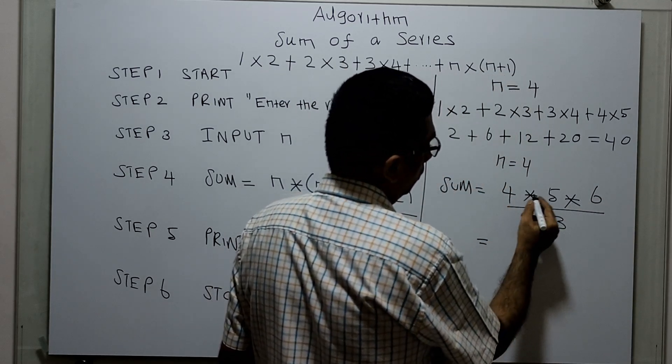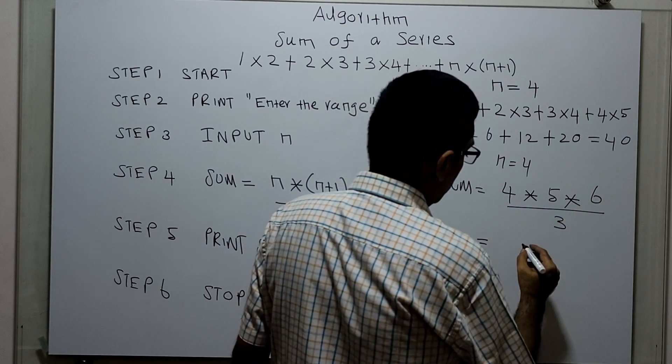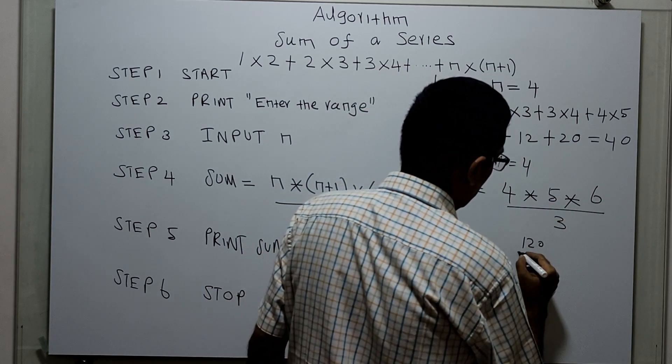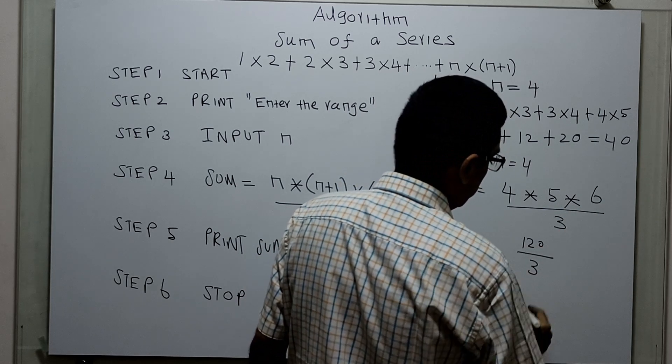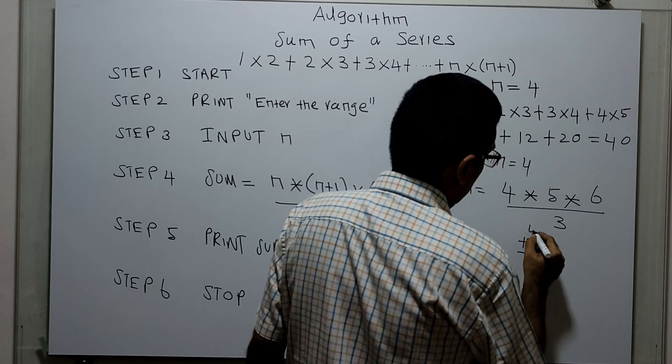Which equals 4×5 is 20, 20×6 is 120, 120 divided by 3, which is 40.